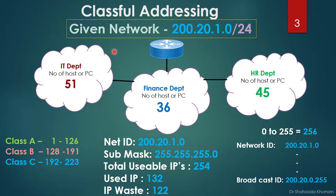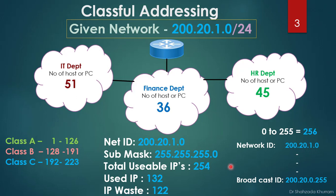The network ID means this represents the complete network. All other devices know the network belongs to this router or organization. So 200.20.1.0 is the network ID. All remaining IPs are usable IPs. The last IP, 200.20.1.255, is the broadcast ID, used for broadcasting. These two IPs — network ID and broadcast ID — cannot be used by hosts.